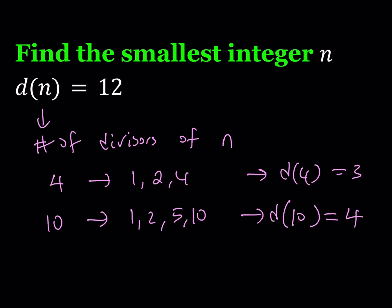But we want to reverse the process. That's what makes this problem more interesting — because we're not interested in finding d(n) of a given number, but we want to know the number whose d(n) is 12, specifically the smallest, because there are infinitely many integers for which this is true. So let's see how we can tackle this problem.